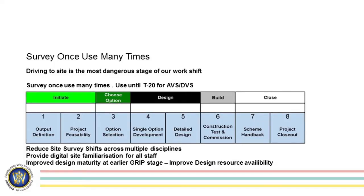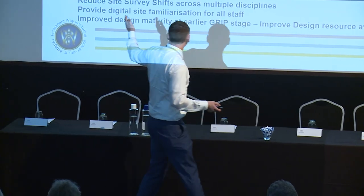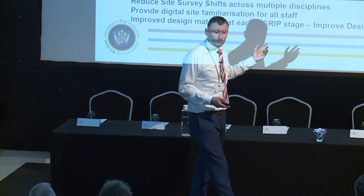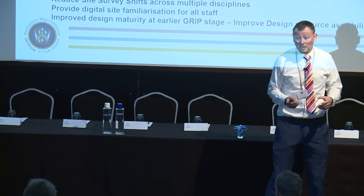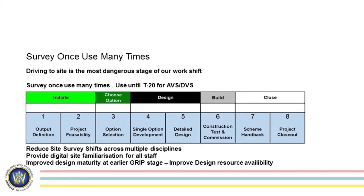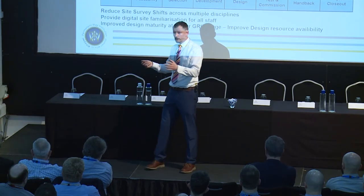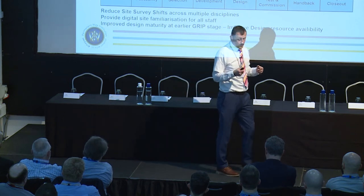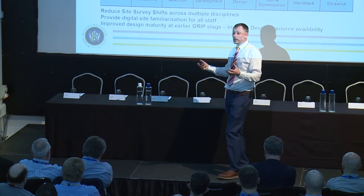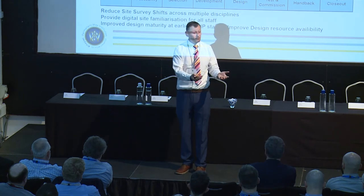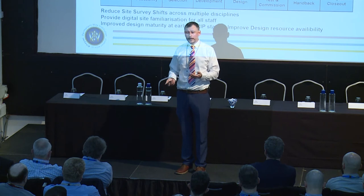Coming back to the mantra we always try to maintain: survey once and use many times. Normally, what we've traditionally done with survey throughout the GRIP stages is that early on we'll look at some imagery, then send somebody out to site. Then we'll run through a design process, do some option selection, then send another bunch of people out — normally from a different contractor — to go back to the same place, acquire more data to a bit more detail, and so on. And then normally at the end, when we come to GRIP 6 to build it, we'll have a different contractor come in to build whatever we're constructing, regardless of the asset — PW, S&T, OLE, structures.